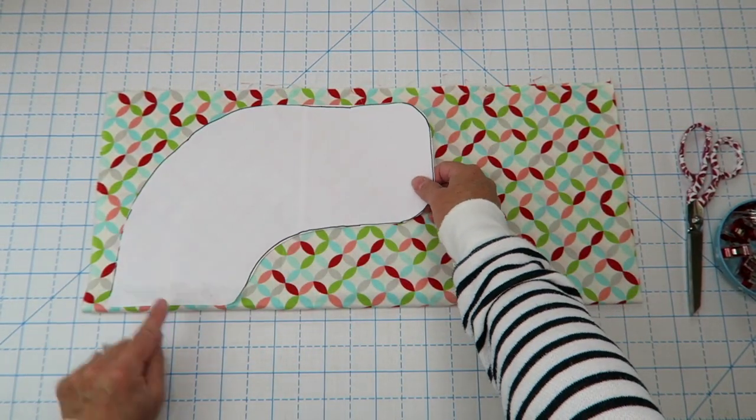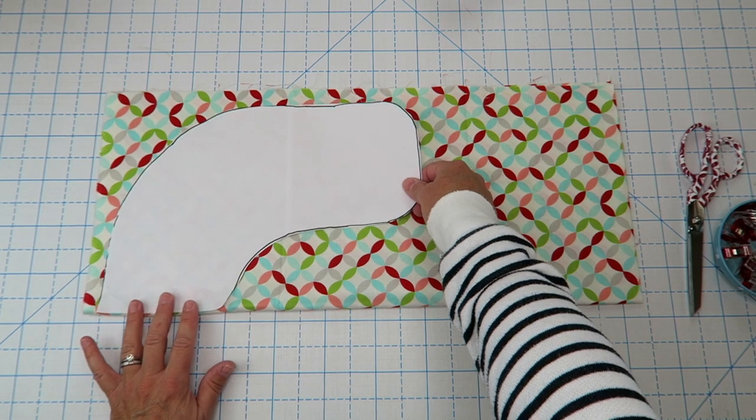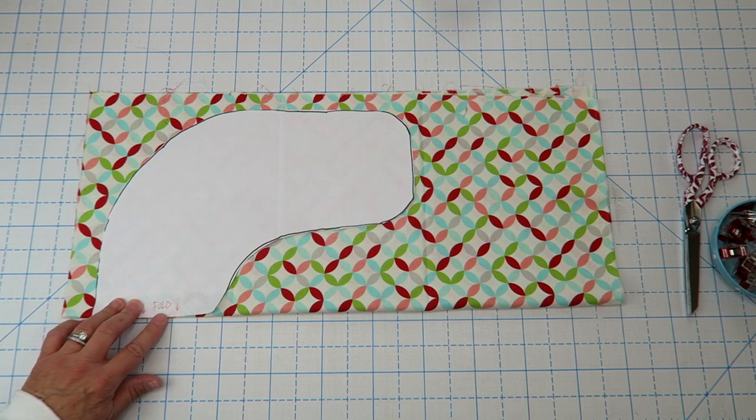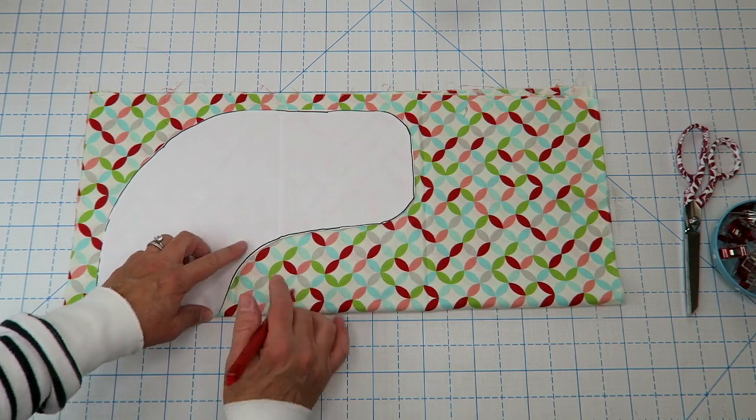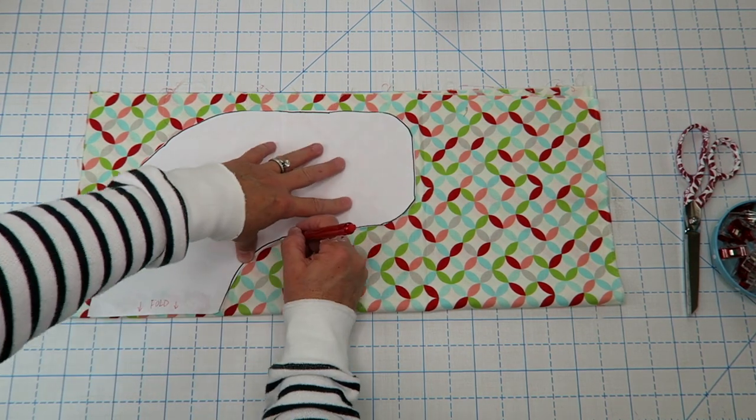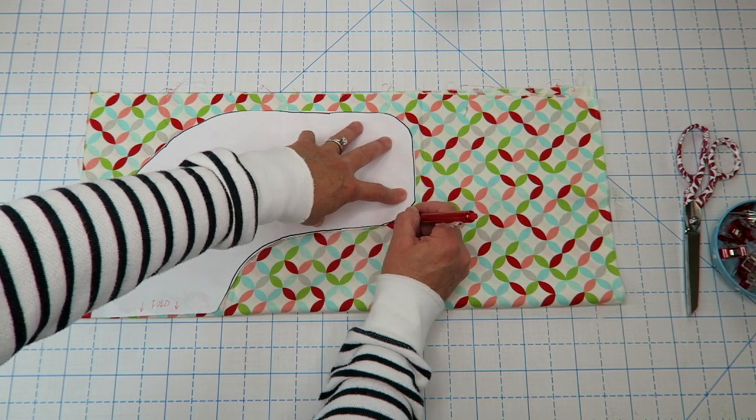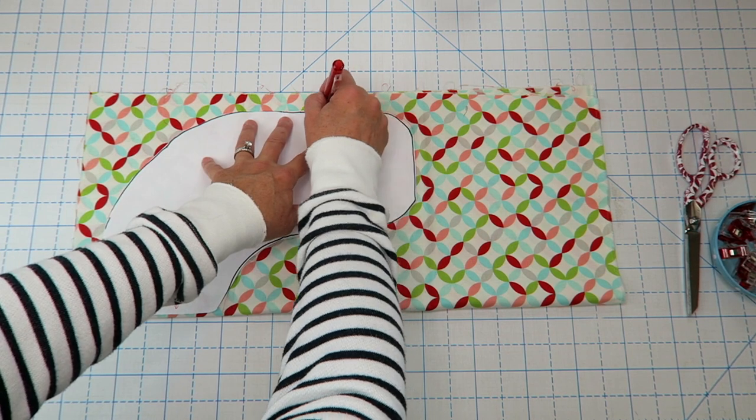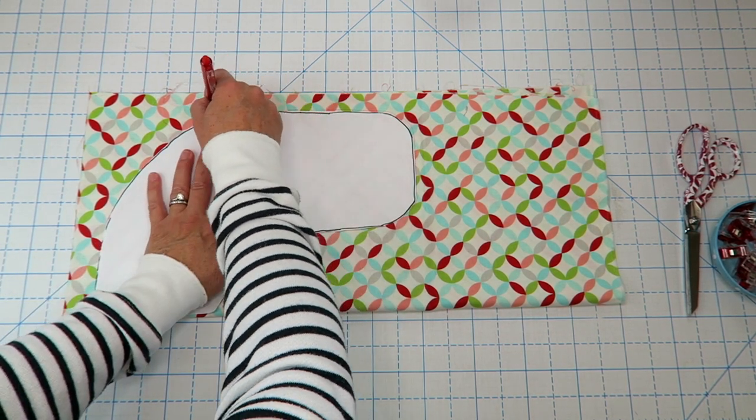Next we're going to take our template and we're just going to place our template along the fold here, and you may just want to mark that on your pattern piece. Then you're going to trace around this pattern. It doesn't have to be perfect, just do a rough tracing here because we're going to actually use this line as our sewing line.